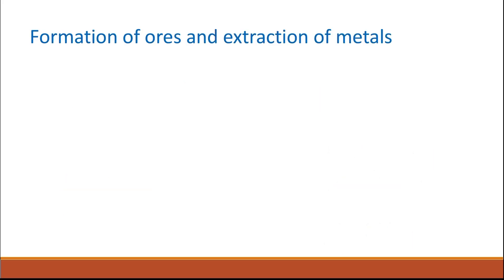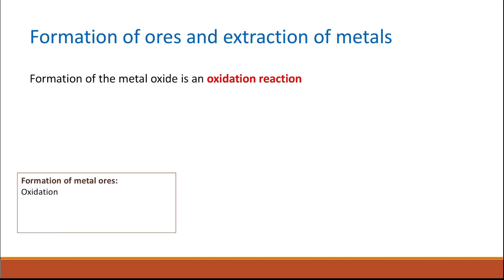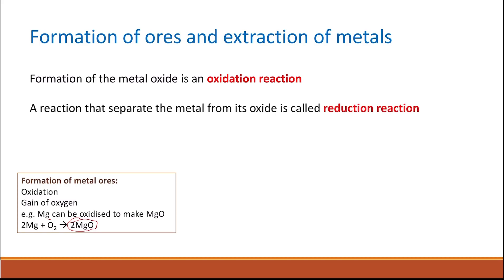The formation and extraction of metals are types of redox reactions. The formation of the metal oxide is an oxidation reaction — there is a gain of oxygen. For example, magnesium reacts with oxygen to give magnesium oxide. This is an oxidation reaction.